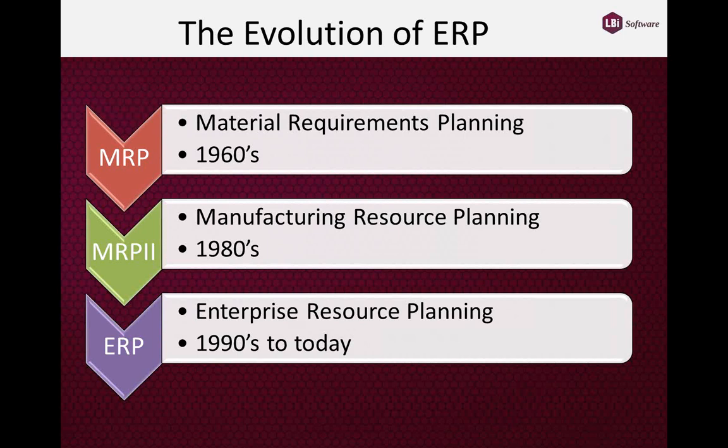Then about 20 years later, in the 1980s, came the concept of MRP II — Manufacturing Resource Planning. That added to MRP by including things like machine utilization, employee resource usage, and financial concerns. For instance, there might be multiple suppliers for one raw material, so it would look at the supplier with the lowest cost and best availability. That eventually evolved in the 1990s to ERP, which we know and love today.